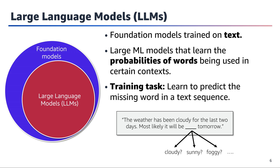LLMs acquire a broad understanding of language by being exposed to vast amounts of text during training. This allows them to generalize well and adapt to various downstream tasks with relatively little task-specific data. Their versatility makes them valuable foundation models that can be fine-tuned and applied across numerous domains and applications, accelerating the development of customized AI solutions.